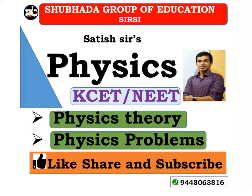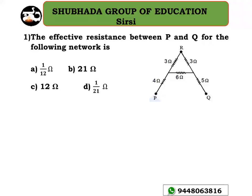Hello everyone, welcome to our channel Shibada Group of Education. You are watching Satish Physics Videos for Karnataka CET. Here is a problem on current electricity: find the effective resistance between P and Q for the following network.